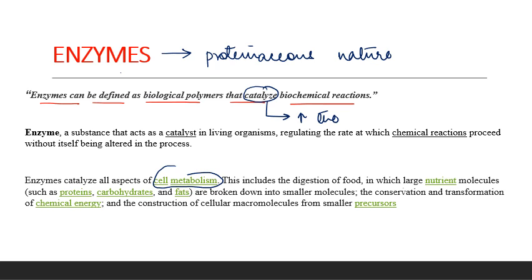Enzymes help in the digestion of food, in which large nutrient molecules are converted into smaller molecules. To explain how enzymes do this, suppose this is a reaction: A plus B gets converted to C plus D.